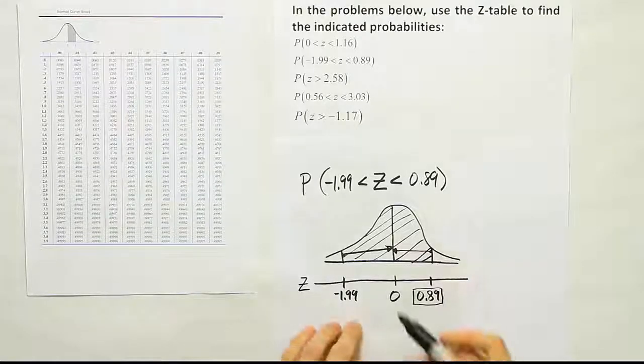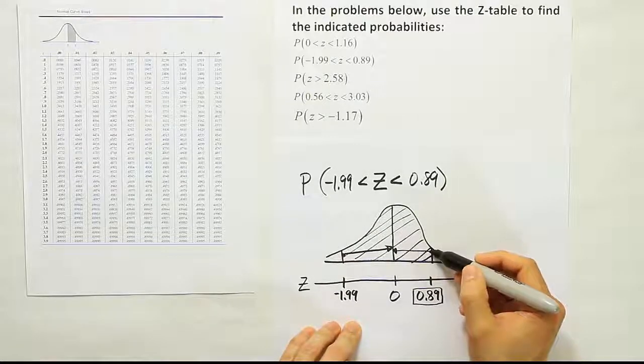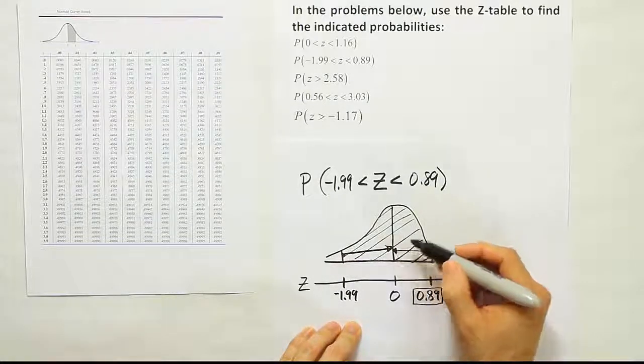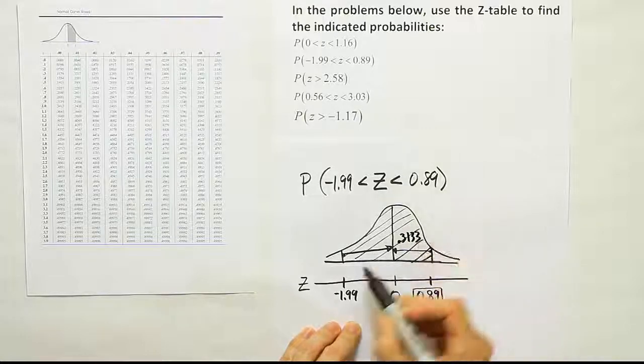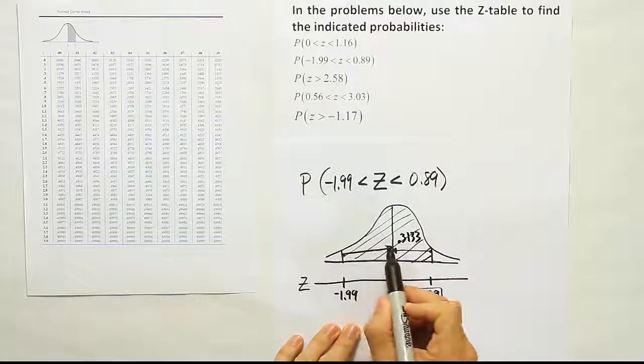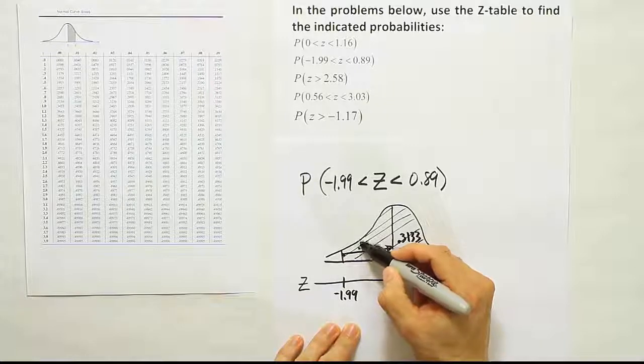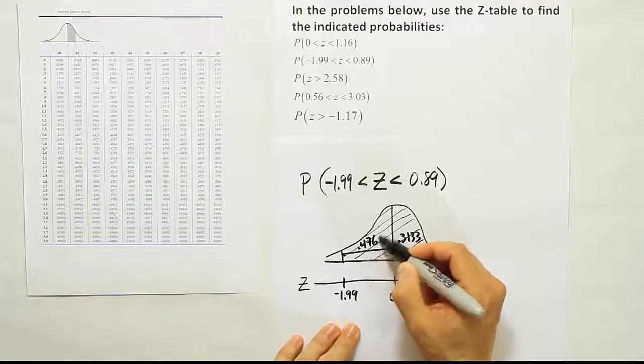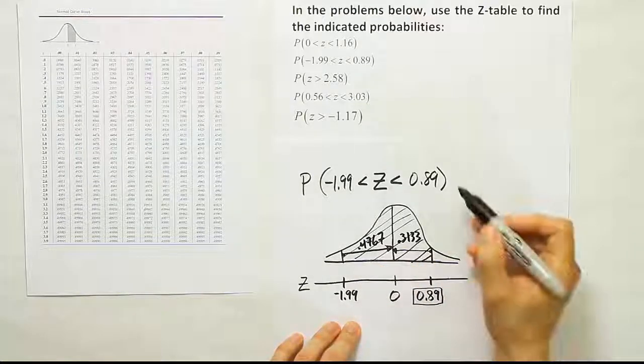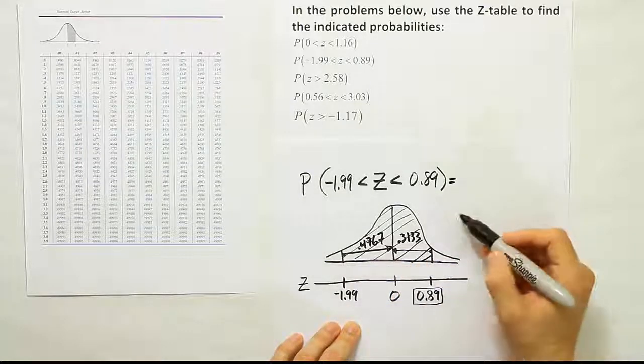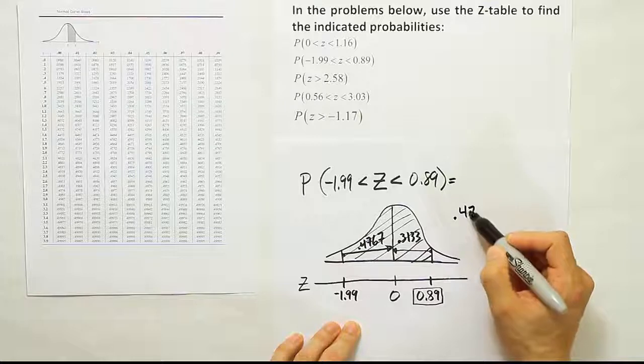Okay, so now that we have the answers for the area from this line to this line which was 0.3133 and the answer from this line to the center which was 0.4767, we should be able to find the total area of the shaded region by adding those two values together. So let's go ahead and do a little old school addition here.